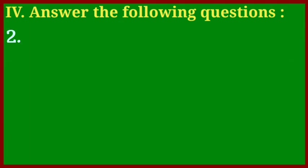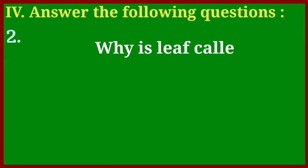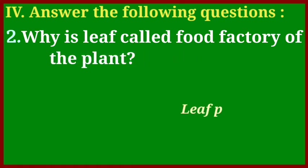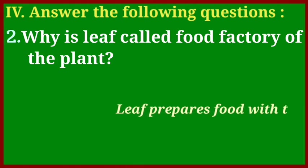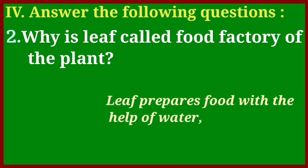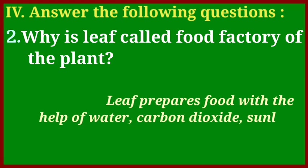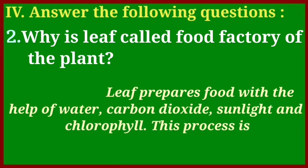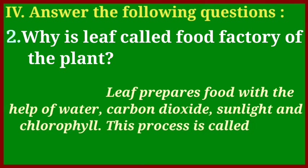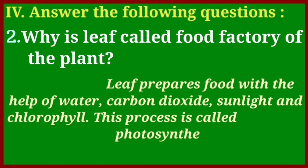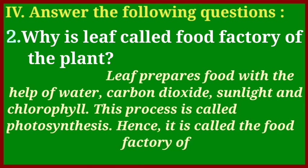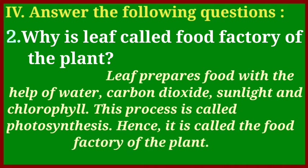Question number two: why is the leaf called the food factory of the plant? The leaf prepares food with the help of water, carbon dioxide, sunlight, and chlorophyll. This process is called photosynthesis. Hence, it is called the food factory of the plant.